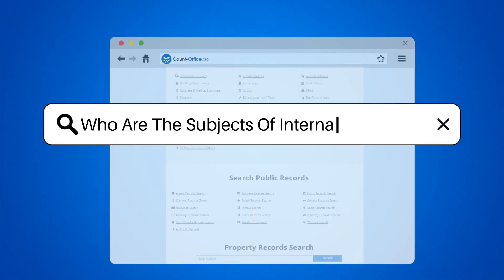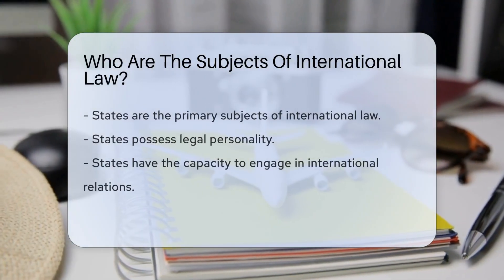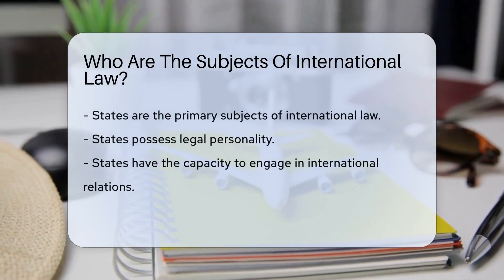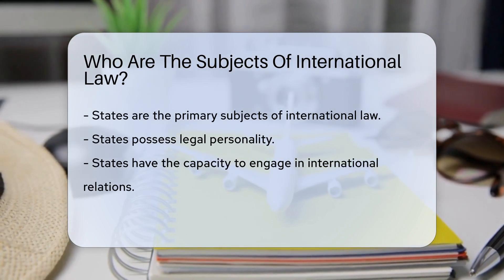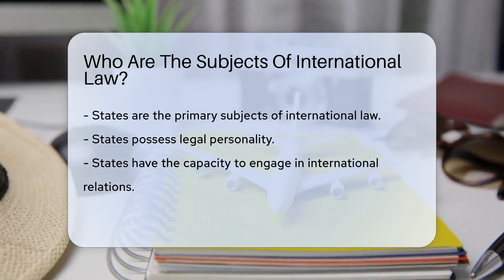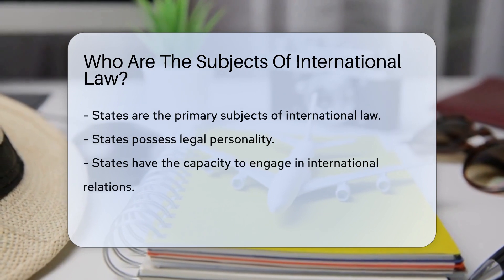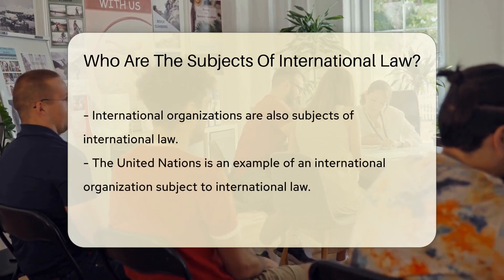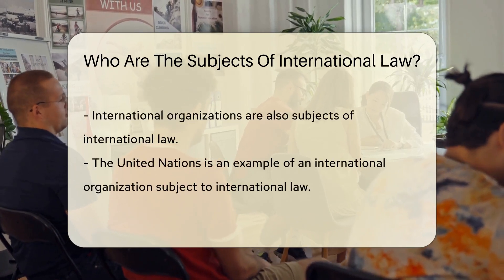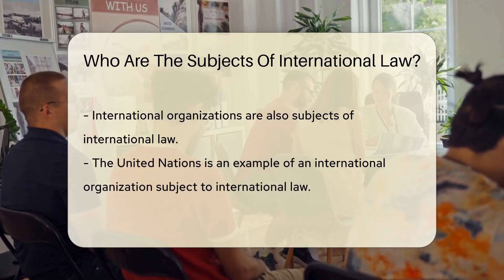Who are the subjects of international law? States are the primary subjects of international law, possessing legal personality and the capacity to engage in international relations. Additionally, international organizations such as the United Nations and the International Red Cross are subjects of international law due to their recognized roles in the global arena.